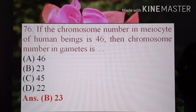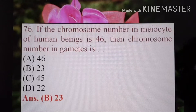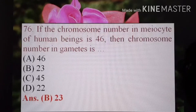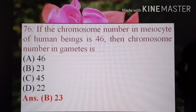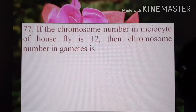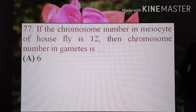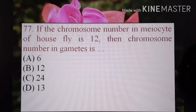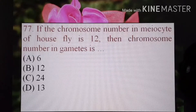This video is completely dedicated to the number of meiocyte and gamete chromosomes. In the next questions, I hope without explanation you will be able to give the answer. Now, if the chromosome number in the meiocyte of housefly is 12, then chromosome number in gametes is — yes, half of 12. The correct option is A) 6. Half of 12 is 6.